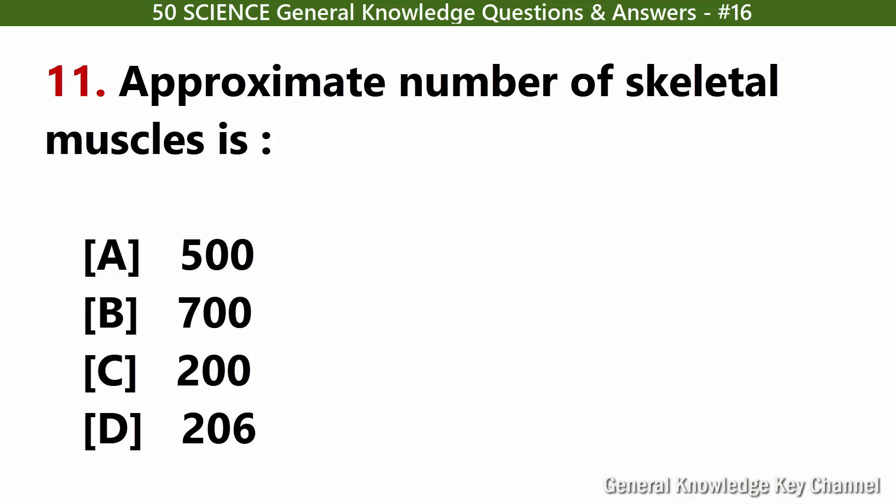Approximate number of skeletal muscles is. Answer B: 700.